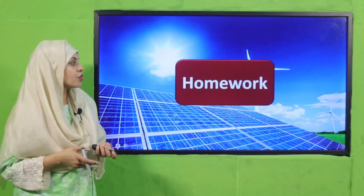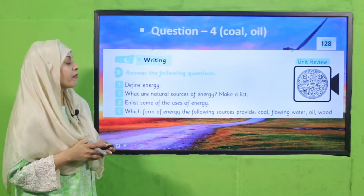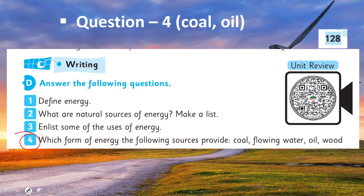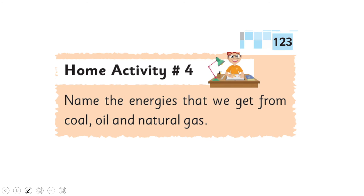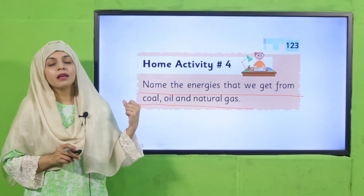Now is the time for homework. Turn to page number 128 and do question number four — complete coal and oil. You have already done flowing water and wood; now write about which form of energy these sources provide in your notebook. Also do home activity number one on page 123: name the energies that we get from coal, oil, and natural gas. We get heat energy, electricity, and fuel from these natural sources.